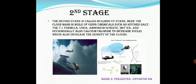The second stage is called the building-up stage. When the cloud mass is built up, the chemicals used are kitchen salt, the TT formula, urea, ammonium nitrate, dry ice, and occasionally also calcium chloride. These increase the nuclei and also increase the density of the cloud.